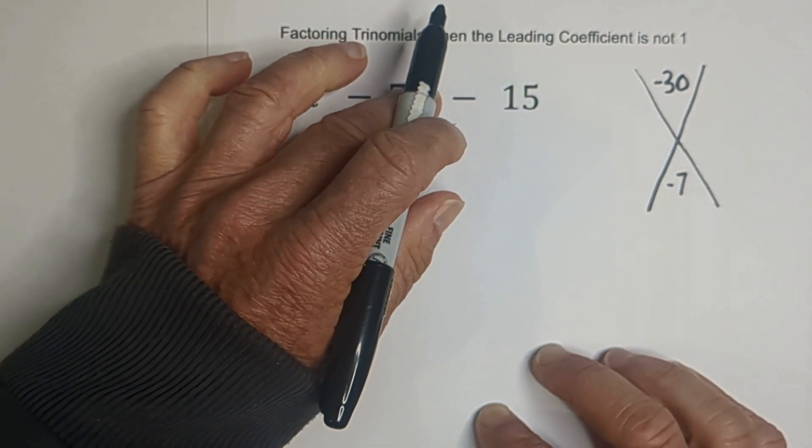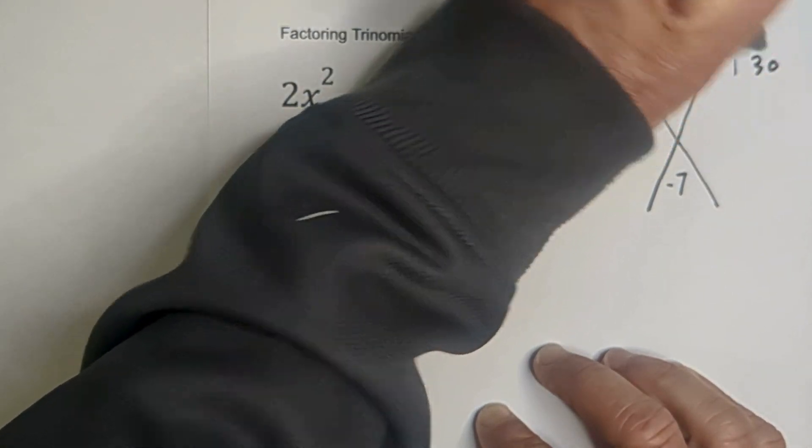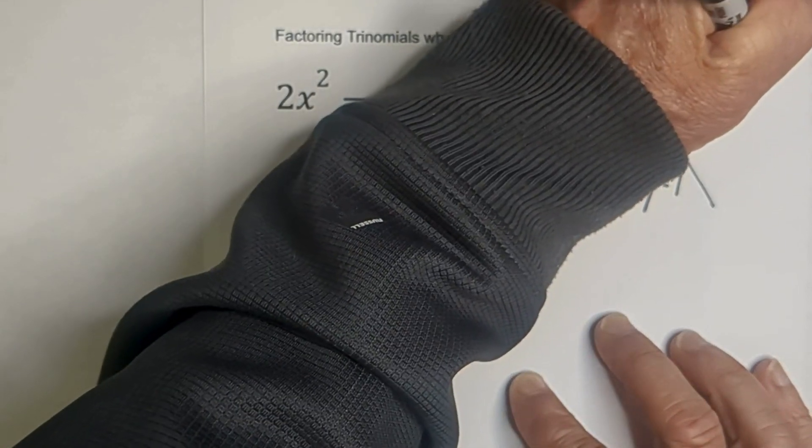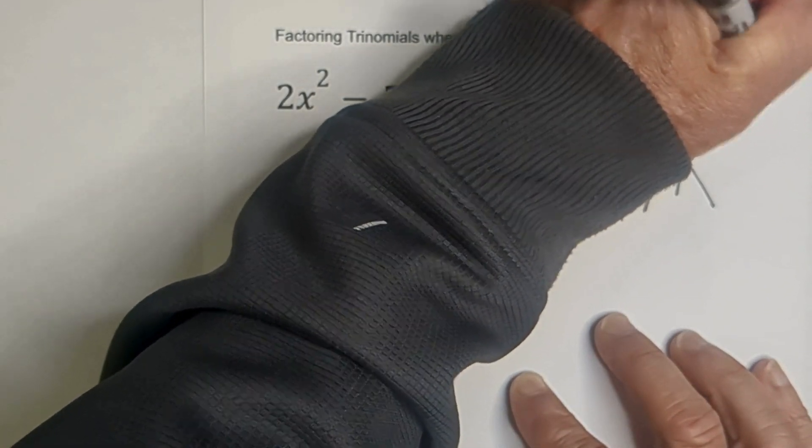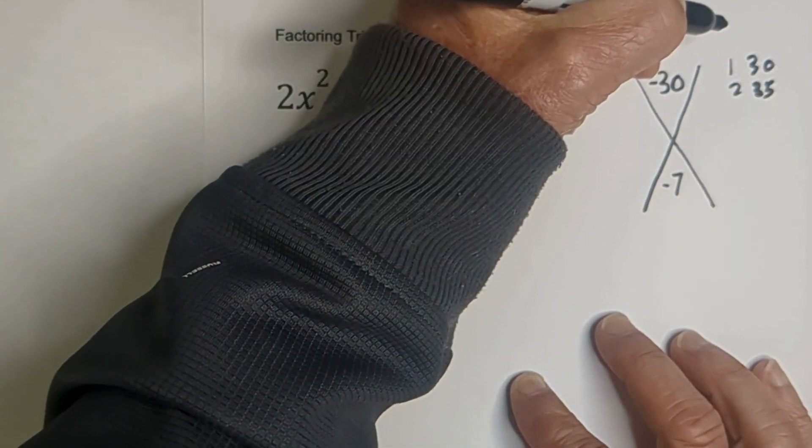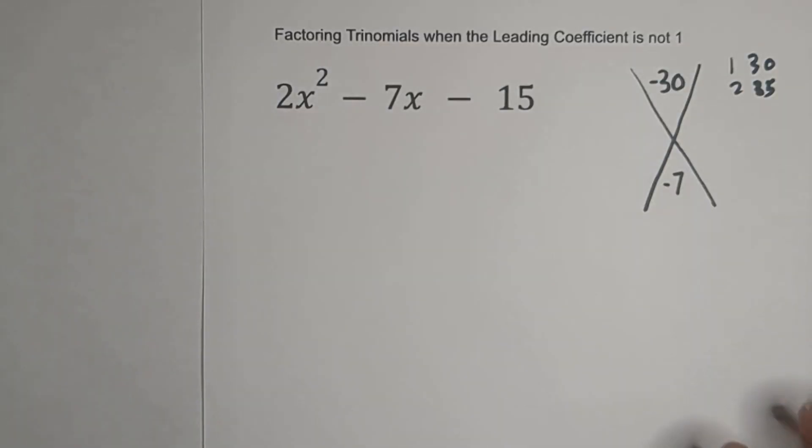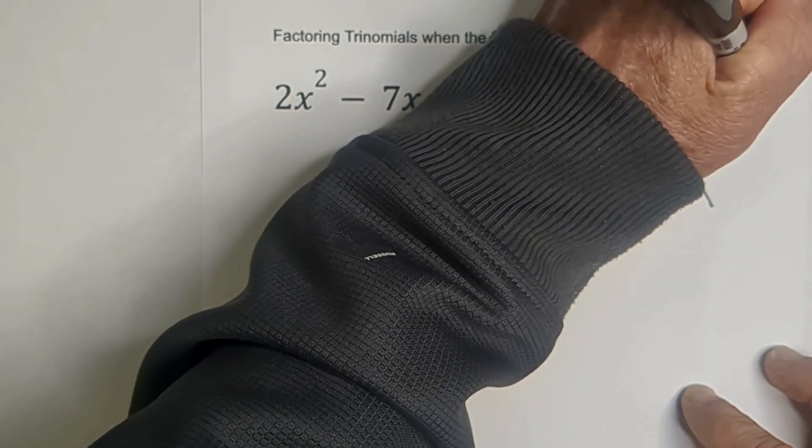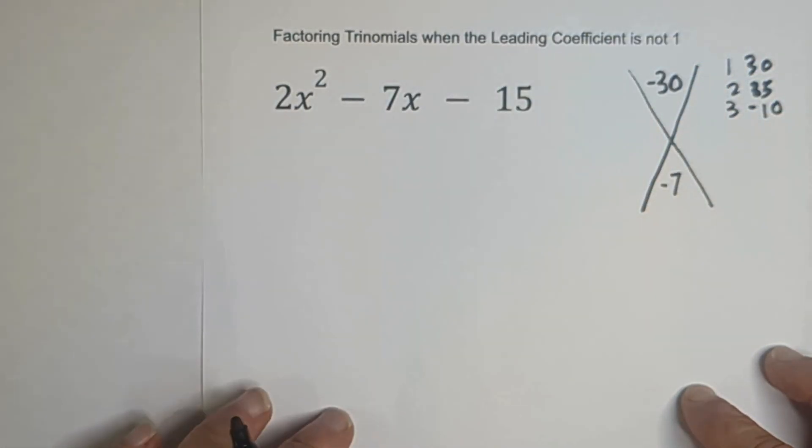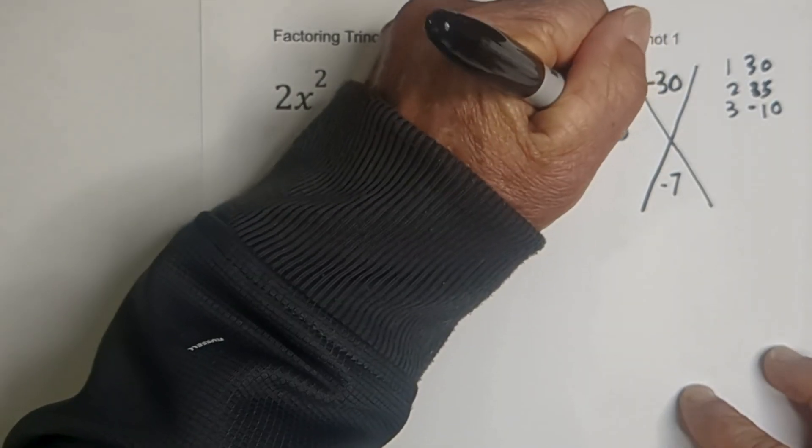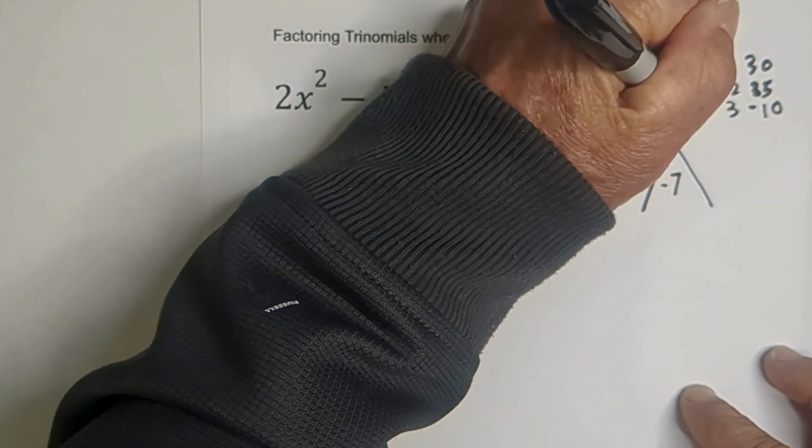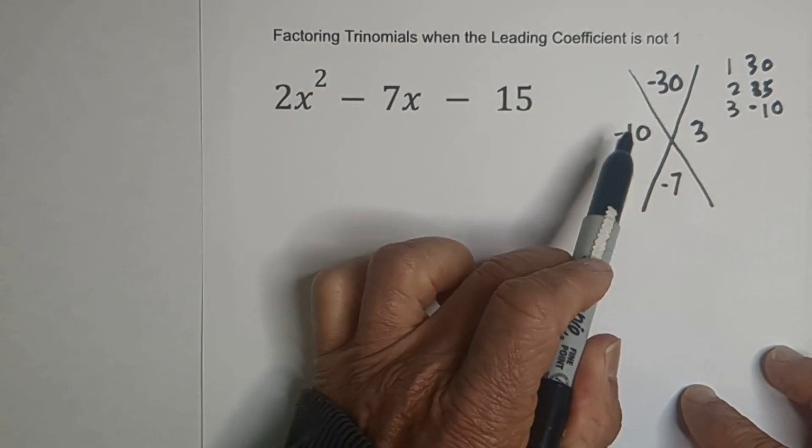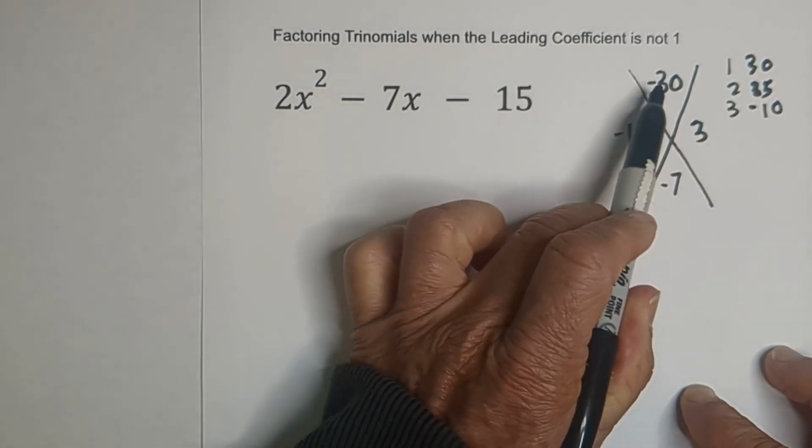So let's just factor 30. We have 1 times 30. That doesn't work. Let's go 2 times 15. No, that doesn't work. But if we go 3 times negative 10, I think that will work. So we have negative 10 and 3 here. And negative 10 and 3 equal negative 7. And negative 10 times 3 is negative 30.